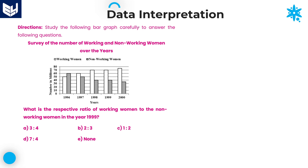Hi everyone, welcome to the session. In this session, I am continuing bar graph data interpretation. First of all, we need to read the information carefully and then solve the questions according to the given information. Here the information is about a survey of number of working and non-working women over the years.